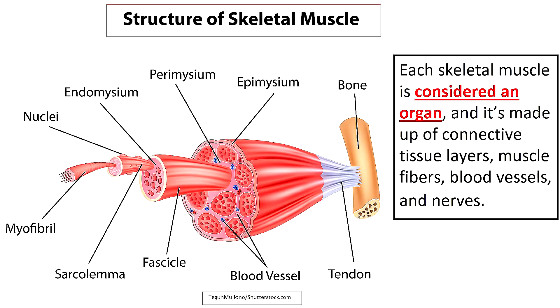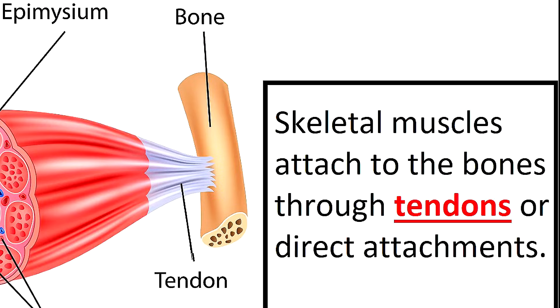Each skeletal muscle is considered an organ and it's made up of connective tissue layers, muscle fibers, blood vessels, and nerves. Skeletal muscles attach to the bones through tendons or through a direct attachment.